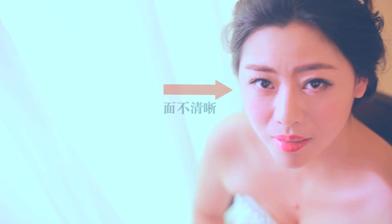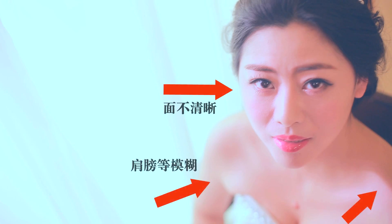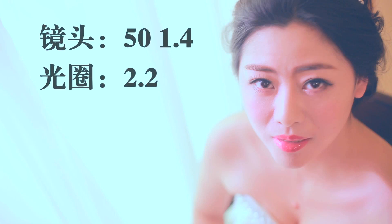This shot is of the bride having her eyelashes done. Because the cinematographer used a prime lens, we can see a very good effect — the face is in sharp focus while other areas including the shoulders are blurred. This layering effect is excellent. The lens used is the 50mm f/1.4, with the aperture set at around f/2.2.